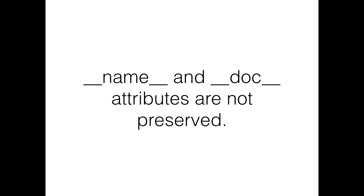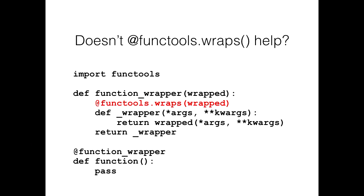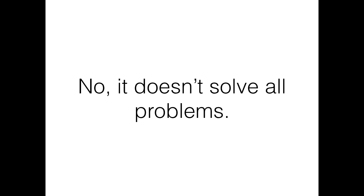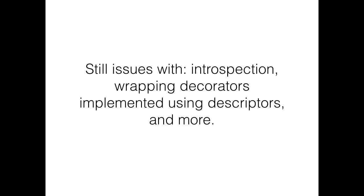But for those who said no — this breaks introspection. That means if I try and get the name attribute or the docstring from that function, it will no longer work. You might say: doesn't functools.wraps help fix that problem? Yes, it solves the problem of name and doc, but it doesn't solve all the problems. There are still issues with introspection related to getting the signature of the function. That general pattern of using a function closure doesn't really work when wrapping a decorator on another decorator where that inner decorator is implemented using a descriptor.